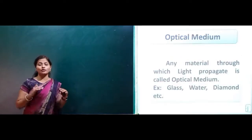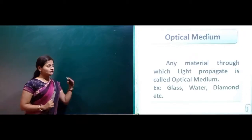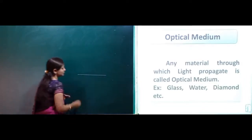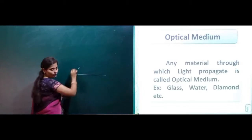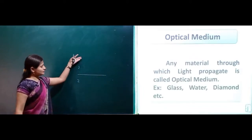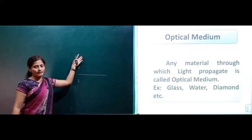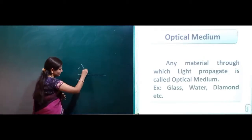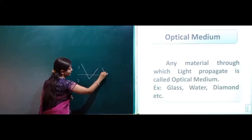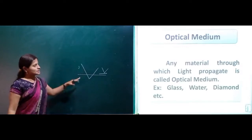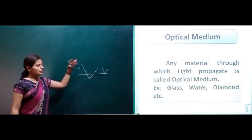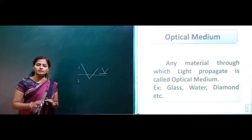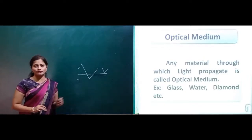Next is optical medium. Any material through which light propagates is called an optical medium. For example, light propagates through media such as glass, water, air, or diamond. Any material through which light propagates is known as an optical medium.